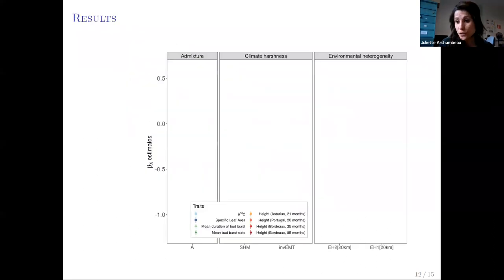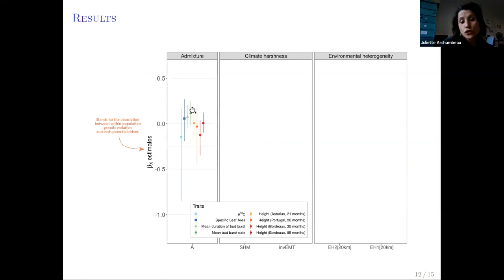So here you will see the credible intervals, which stand for the association between the quantitative genetic variation within each population and each of the potential drivers on the x-axis. The different colors stand for the different traits: blue for the functional ones, green for the phenology-related ones, and orange for height. All the credible intervals of the population admixture indexes crossed zero, so we considered that there was no association between population admixture and the quantitative genetic variation within each population for any traits.